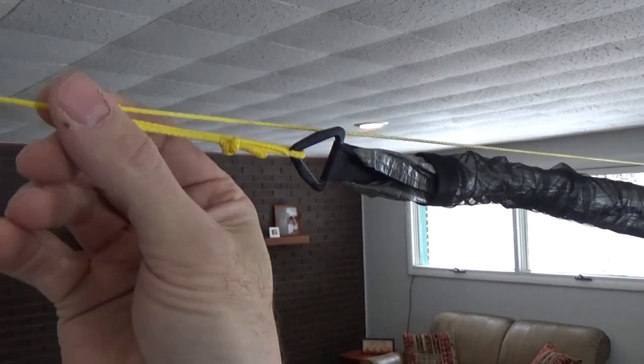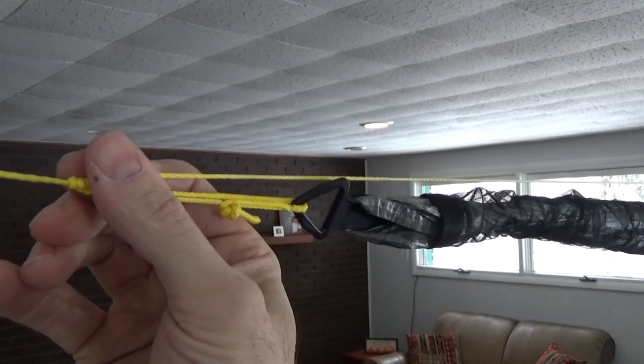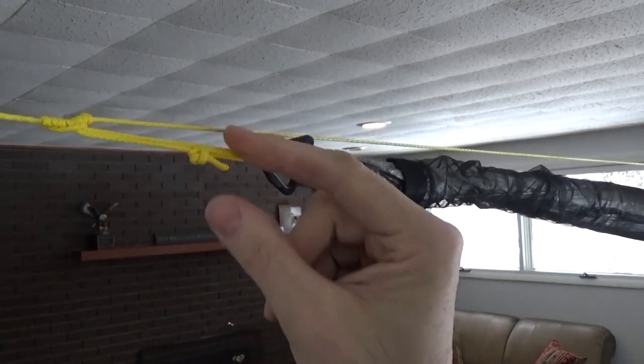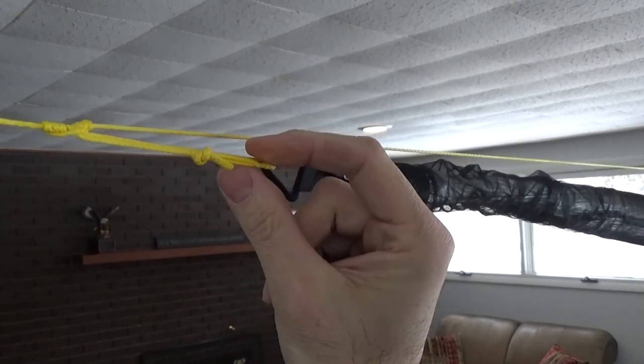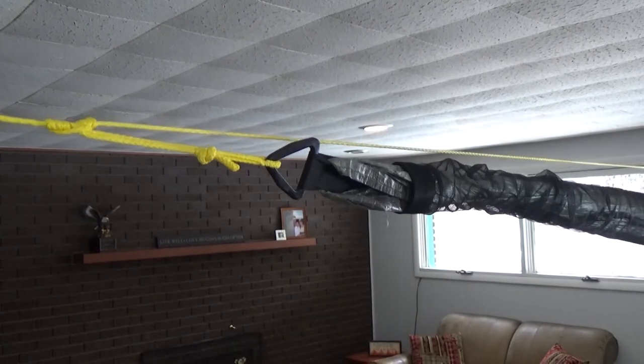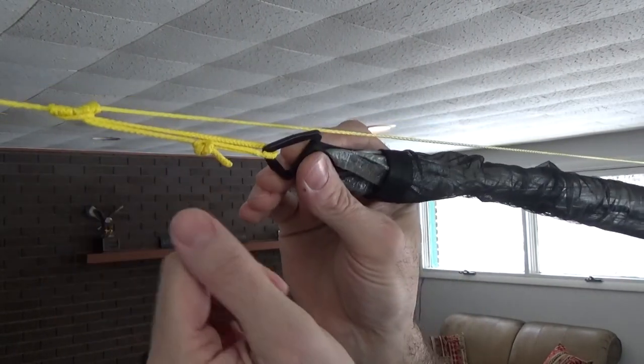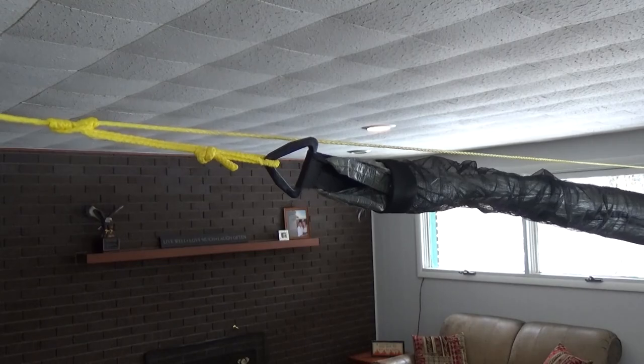So that'll maintain tightness because of the Prusik knot on it. And then the knot will maintain its integrity because of its design. So that's just another way to attach your tarp to the ridge line if you want to try a different method.